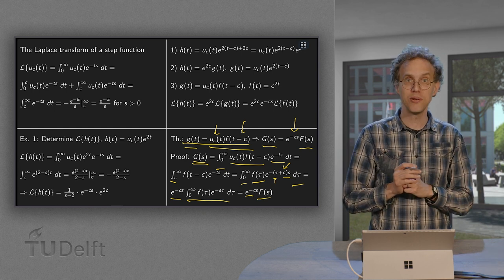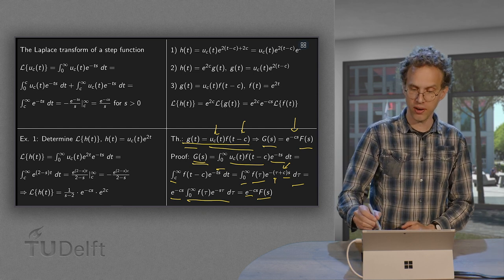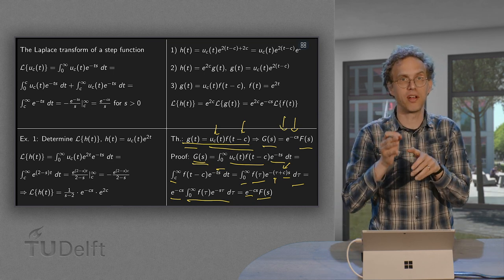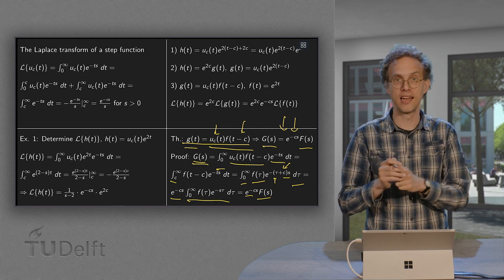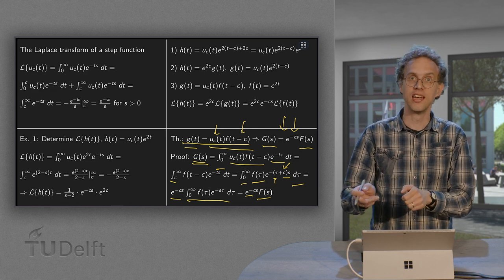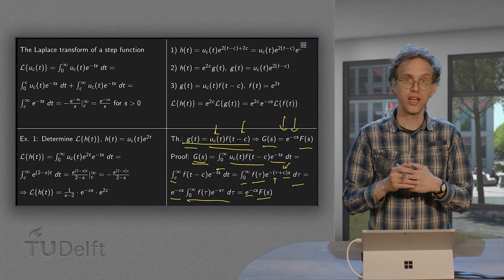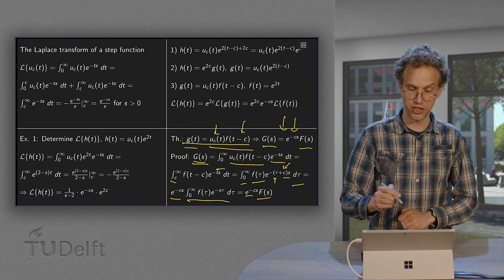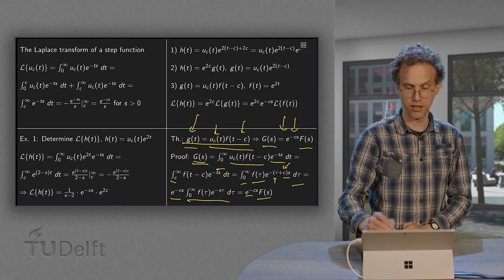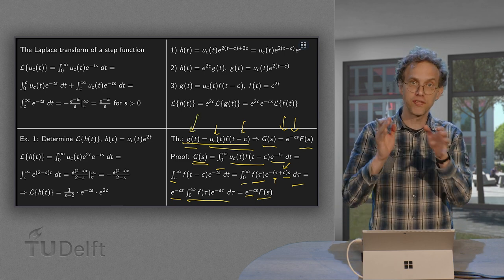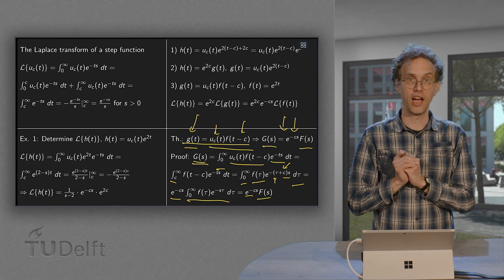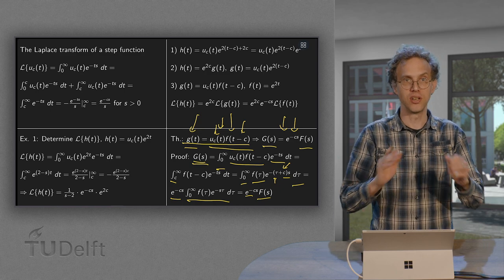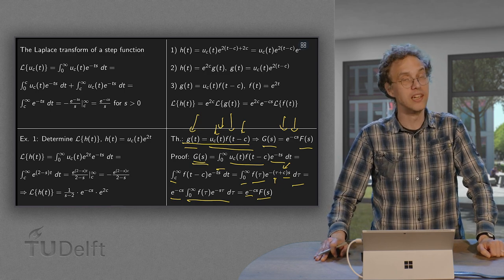This formula is mainly used in the other direction: if G(s) equals e^{-cs} times some known F(s) — known in the sense that you can find its inverse transform — then you can find the small f(t). From that, you can also recover g(t), because g(t) is simply f(t-c) times the step function u_c(t). That is how this formula is mainly used.